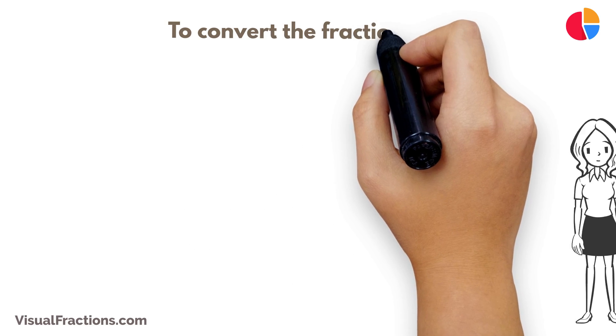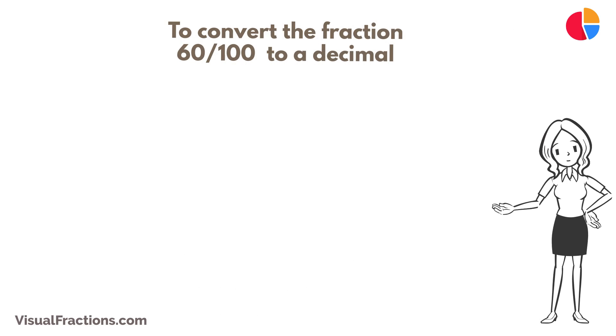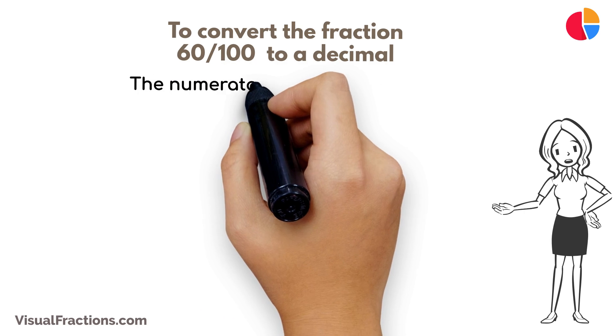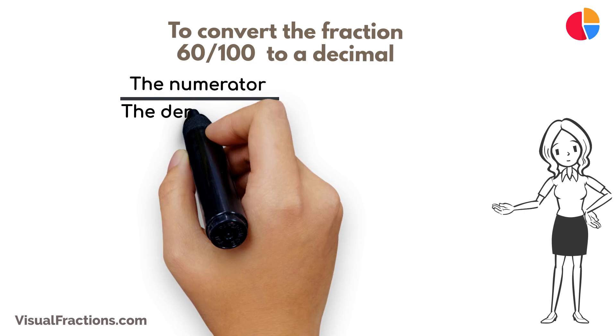To convert the fraction 60/100 to a decimal, all we need to do is divide the numerator, the top number, by the denominator, the bottom number.